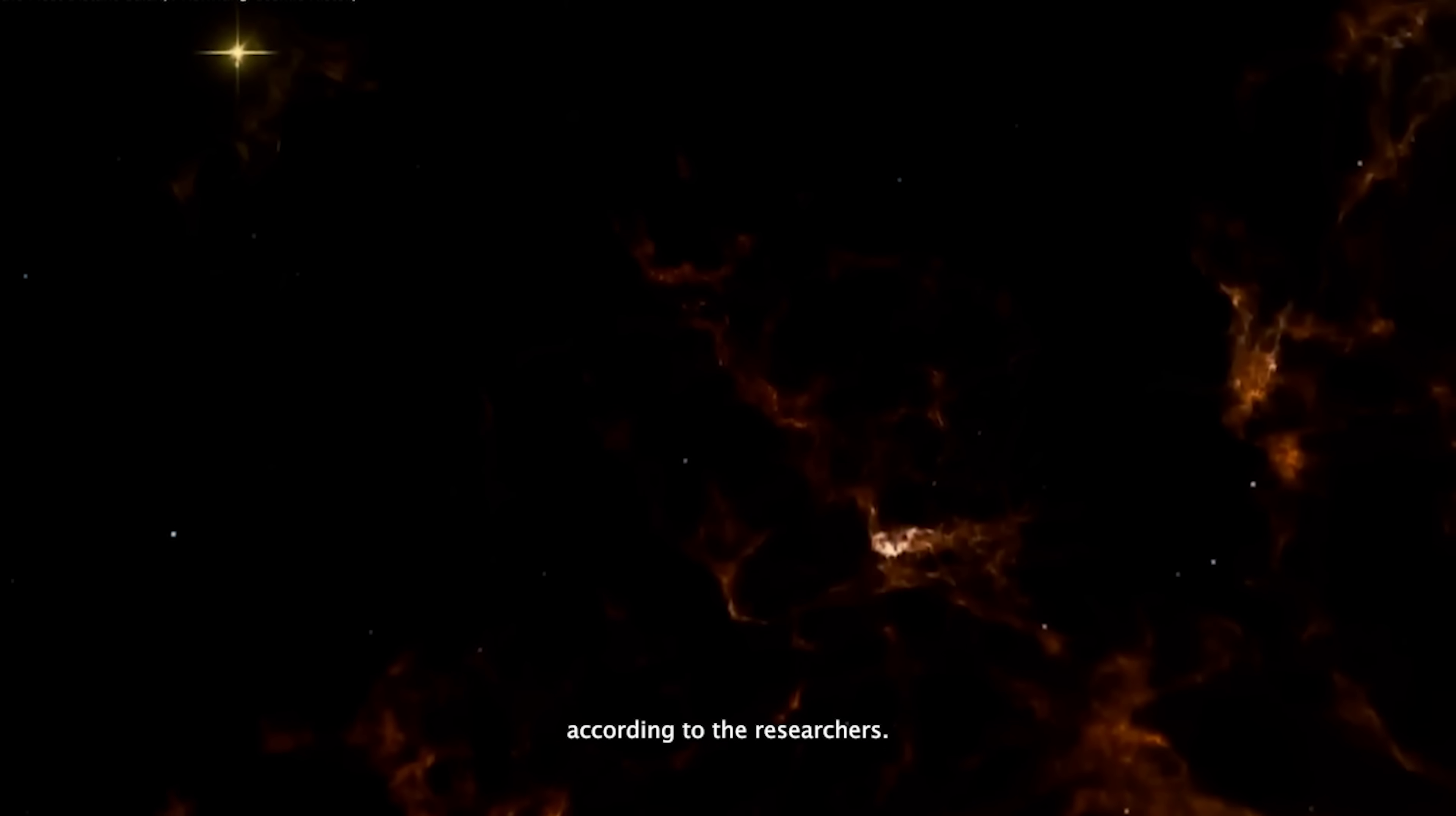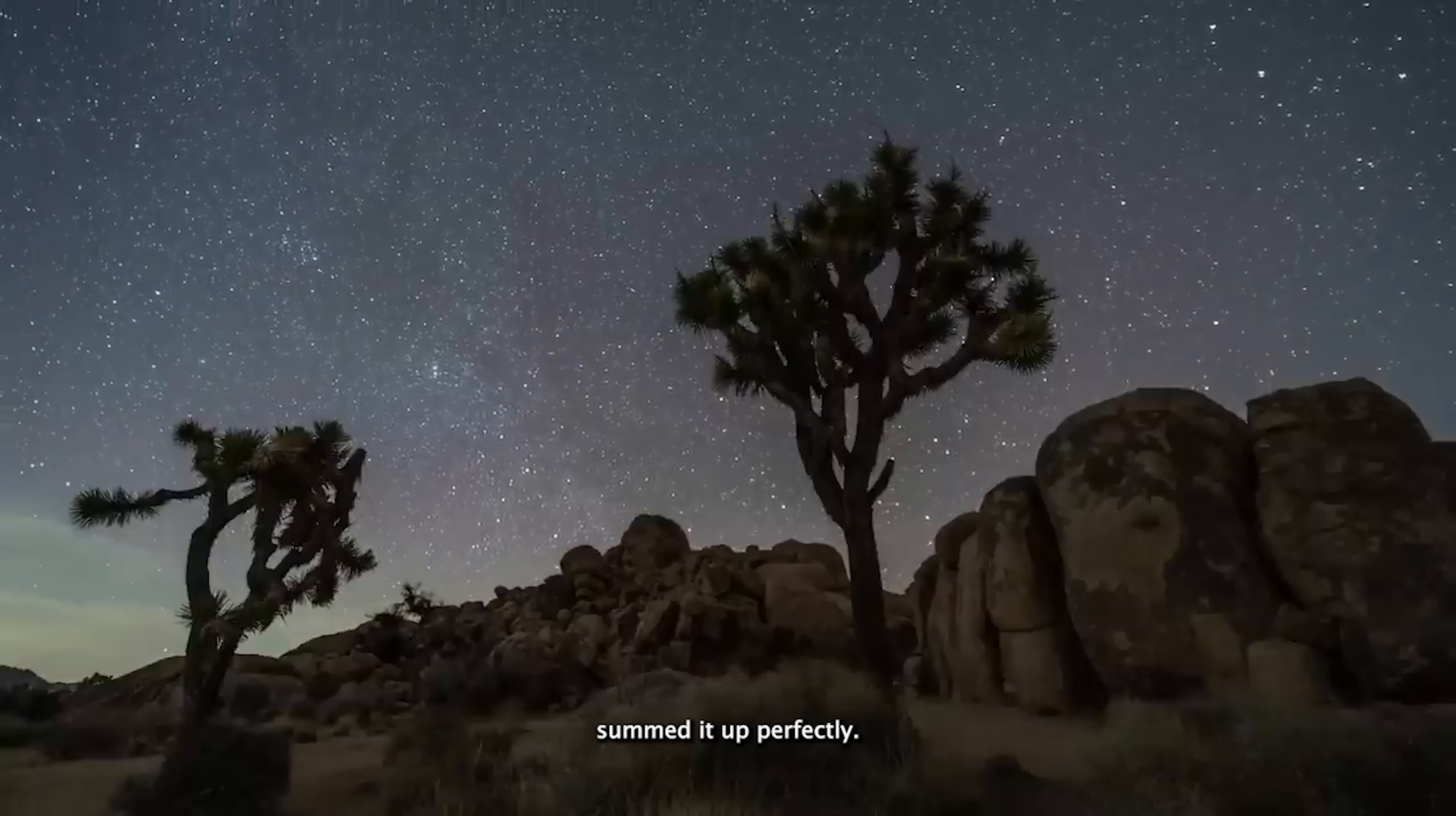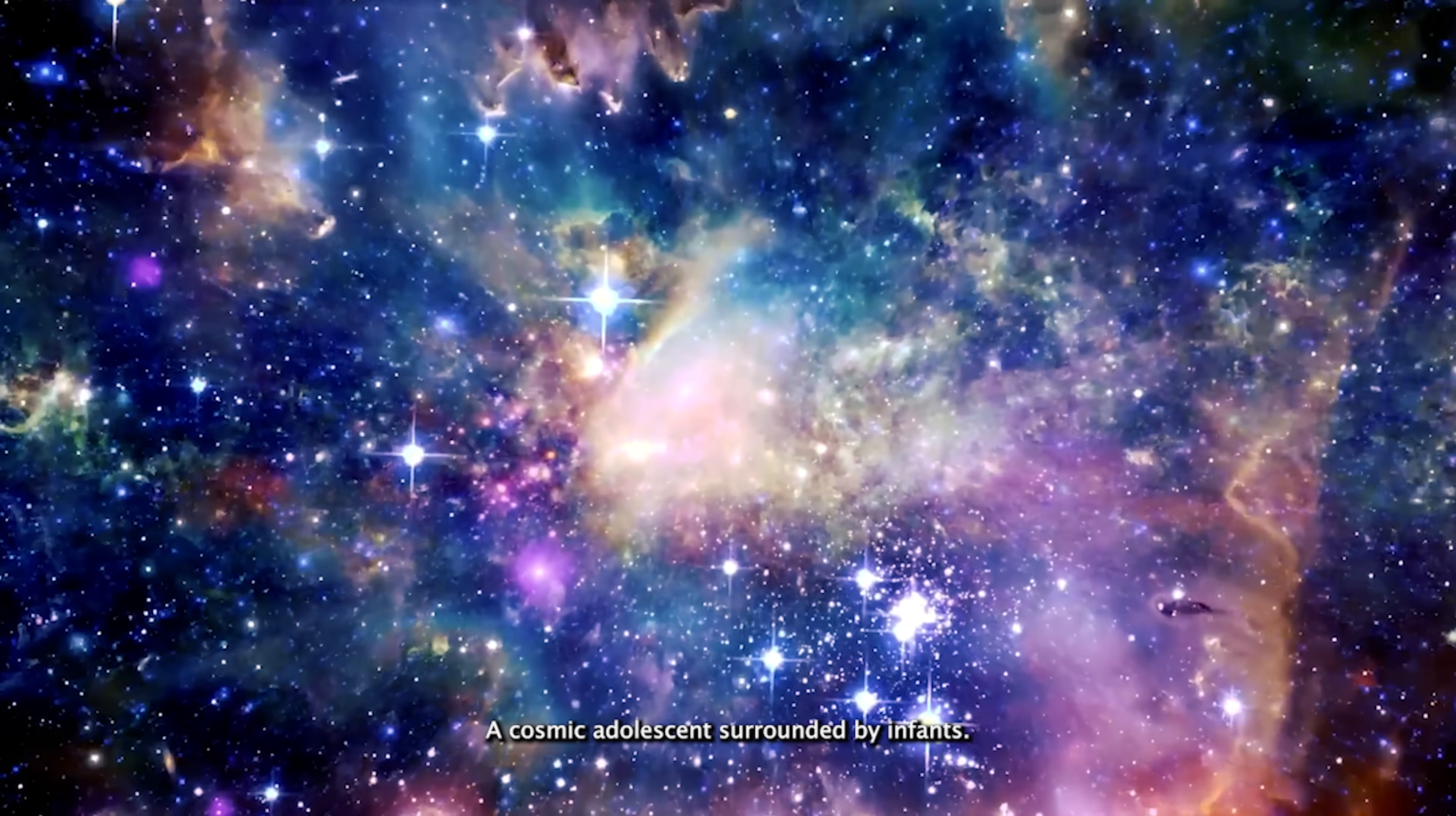According to the researchers, it contains nearly 10 times more heavy elements than current models said it should at that point in the universe's timeline. In other words, the universe may have been forming stars and recycling material at a much faster rate than we imagined. Sander Schaus, the lead author of the Dutch-led study, summed it up perfectly. This discovery is like finding a teenager in a room where you were only expecting newborns. Astronomers anticipated spotting chemically primitive baby galaxies in the early universe, but instead, they found one that had already gone through substantial chemical evolution, a cosmic adolescent surrounded by infants.